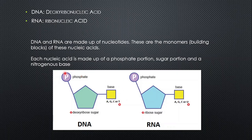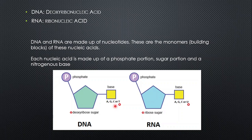This whole thing collectively is called a nucleotide. In RNA, you also get the phosphate portion, the sugar portion, and the nitrogenous base. In DNA, the sugar is deoxyribose sugar, and in RNA, it's ribose sugar.